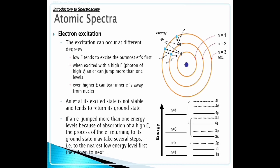Even higher energy can tear inner electrons away from the nucleus. An electron at its excited state is not stable and tends to return to its ground state.